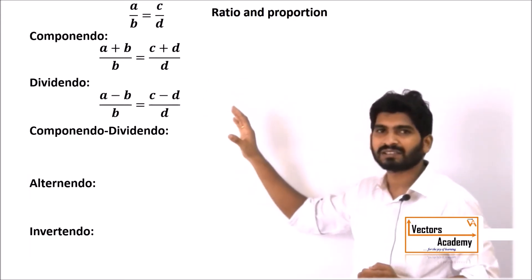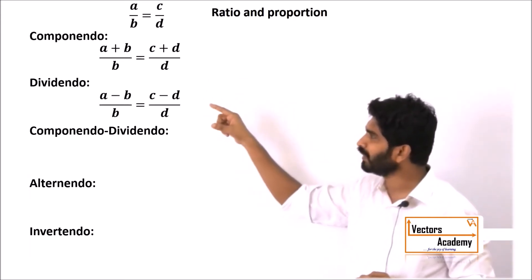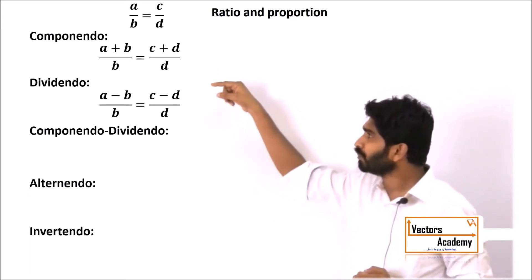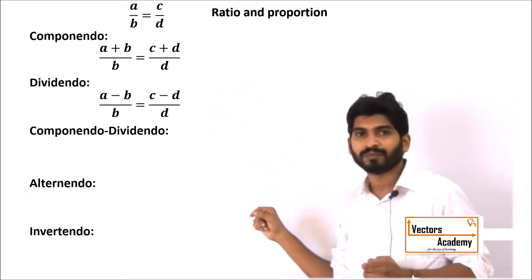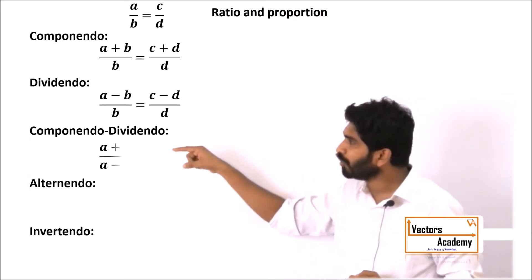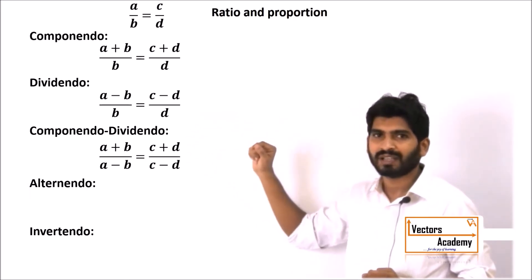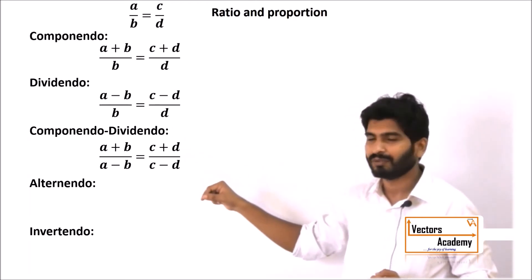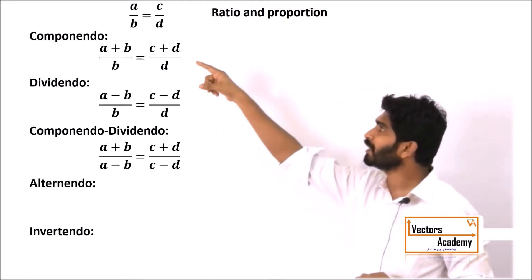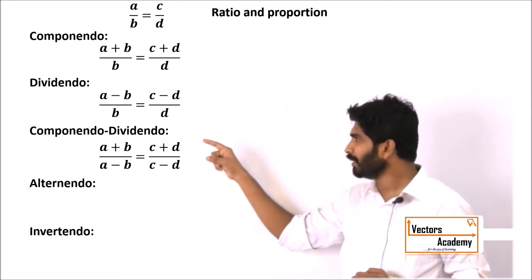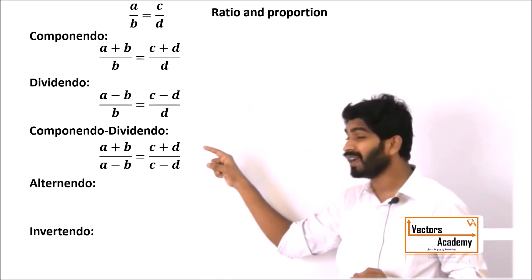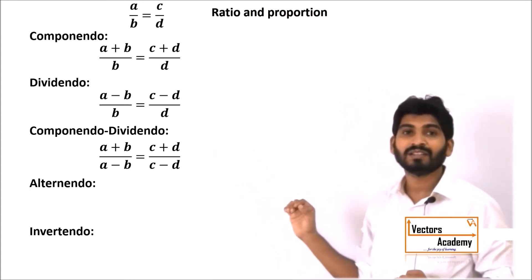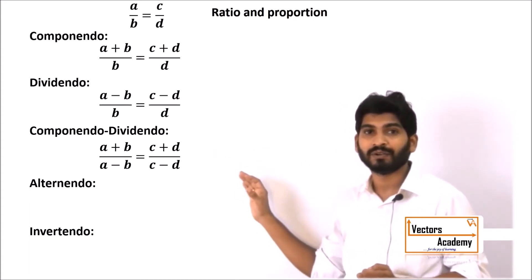Whereas in Dividendo it is minus: A minus B upon B is equal to C minus D upon D. The combination of both is Componendo Dividendo — you add the denominator to the numerator and subtract the denominator from the numerator. So if A/B equals C/D, you get A plus B upon A minus B is equal to C plus D upon C minus D.